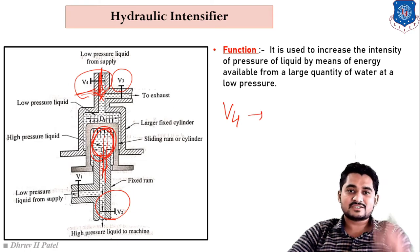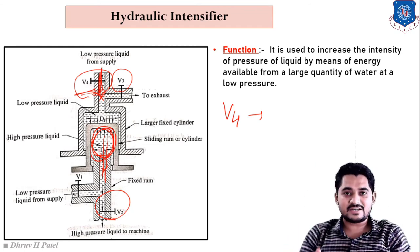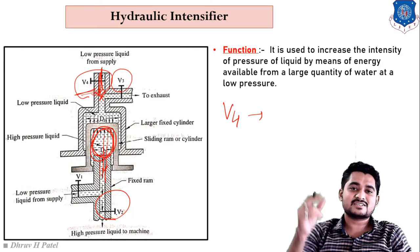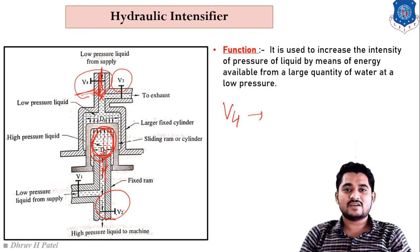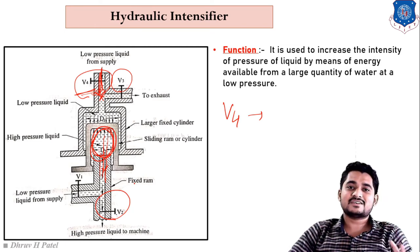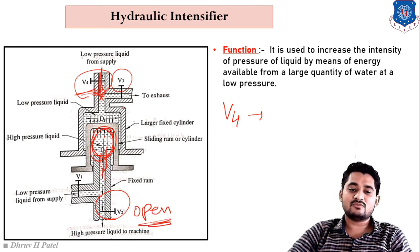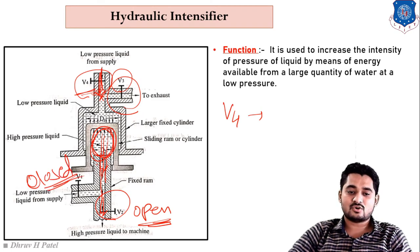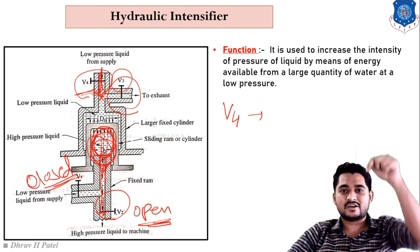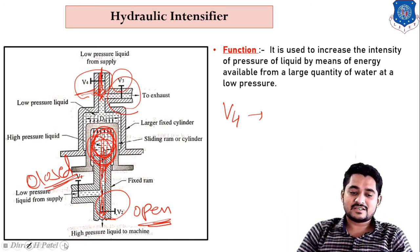When the sliding ram moves downward, the stored liquid moves into the smaller cross-sectional area of the fixed ram, increasing pressure intensity. At this point, V2 valve is opened and V3 is closed, so all the higher pressure liquid goes out through V2. V1 is also closed. Thus, the lower-pressure liquid is converted into higher-pressure liquid delivered to any machine.